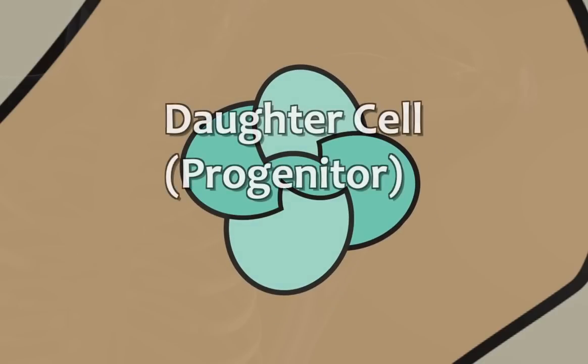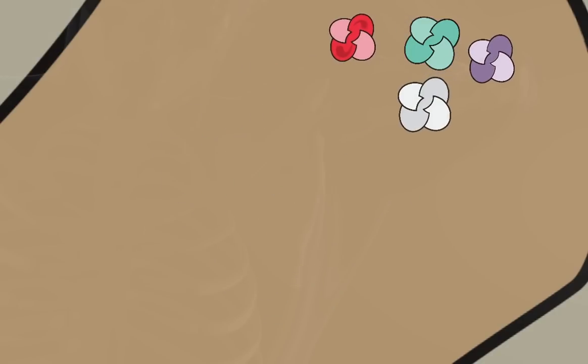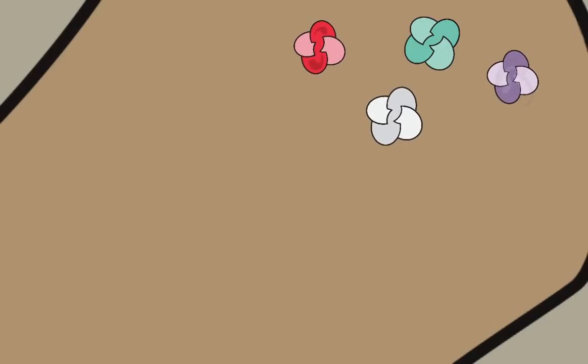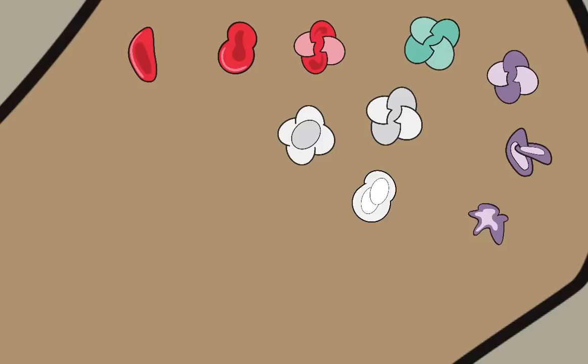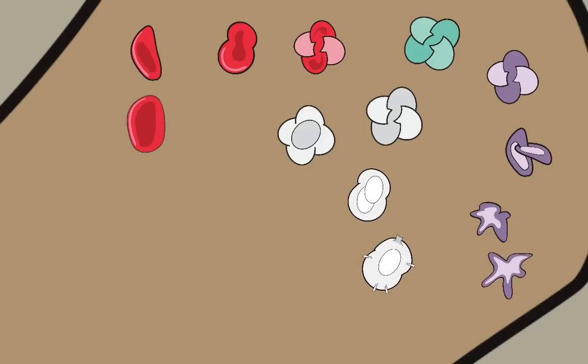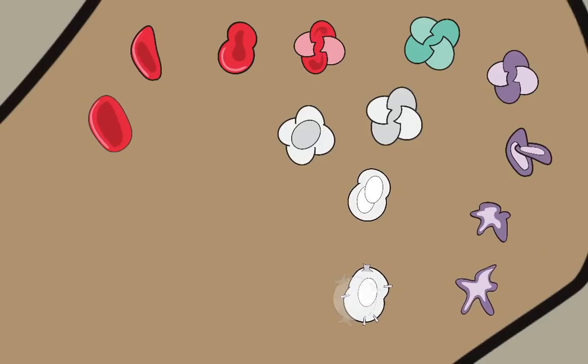The daughter cells, on the other hand, are known as progenitor cells because they continue a process of multiplying and dividing into different types of cells. This process is known as differentiation, where each new type of progenitor cell continues to divide and multiply into new types of cells until finally reaching their full maturity and differentiation.